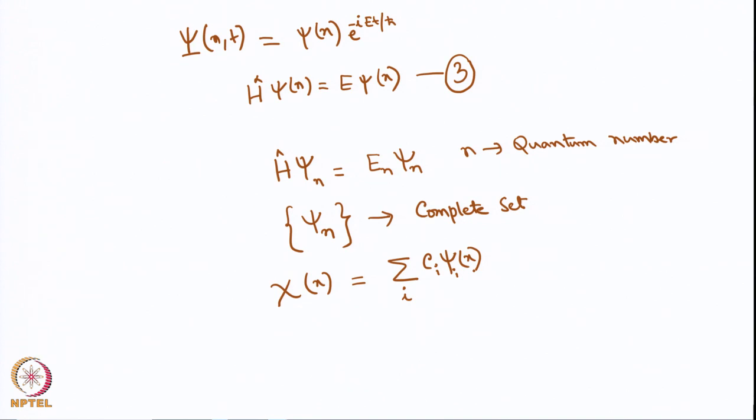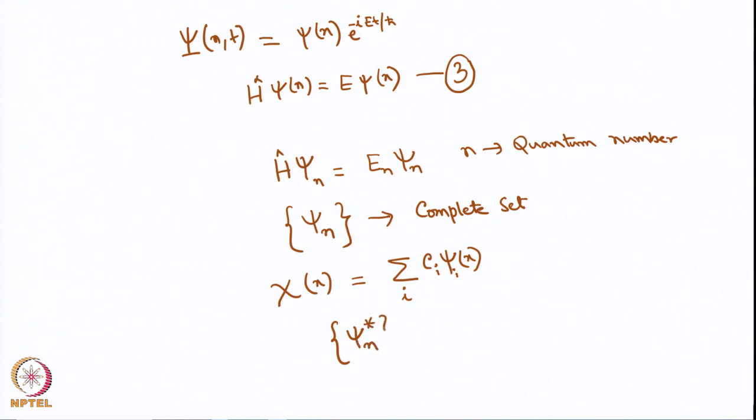The complete set means that any arbitrary function χ(x) can be written as a summation Σ c_i·ψ_i(x) — any arbitrary function can be written as a linear combination of elements of the complete set. As an analogy, in Cartesian coordinates any point can always be written as a linear combination of x, y, and z, so the Cartesian vectors x, y, z form a complete set. In quantum mechanics, for every ψ_n there exists a complex conjugate set, because there are no restrictions requiring the wave function to be real; in general a wave function can be complex.